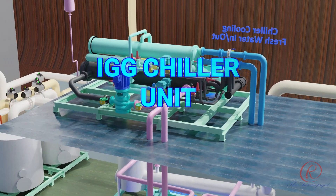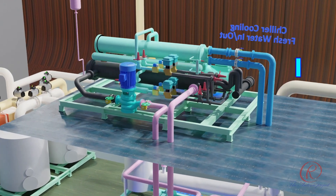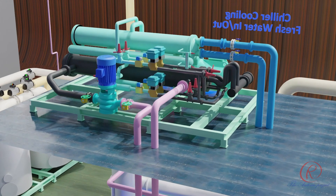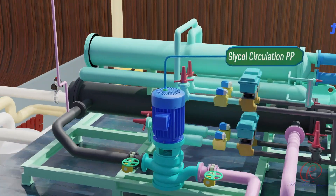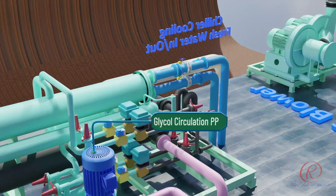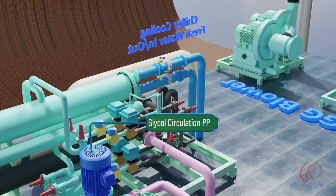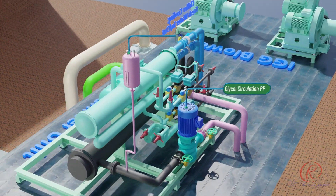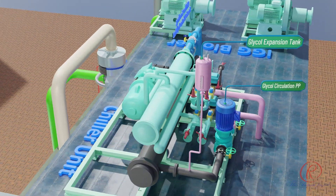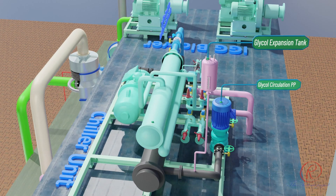IGG Chiller Unit. Glycol circulation pump: to circulate cool glycol water from the chiller to the cooler. Glycol expansion tank: to accommodate the expansion of fluid when it heats up and to maintain system pressure within safe limits.